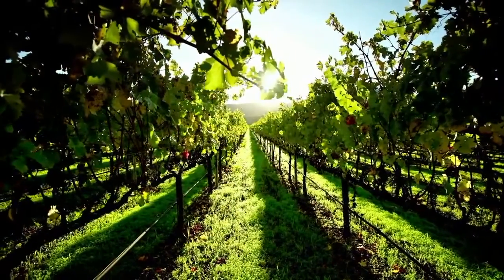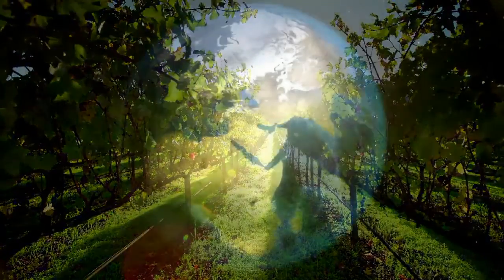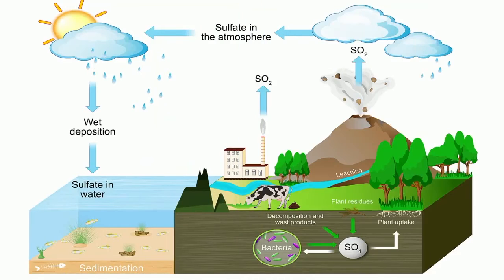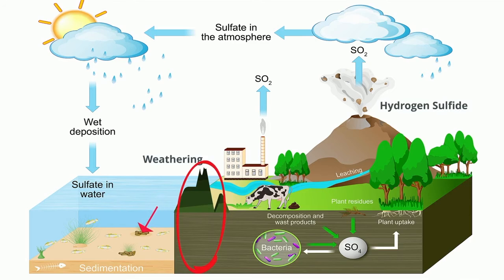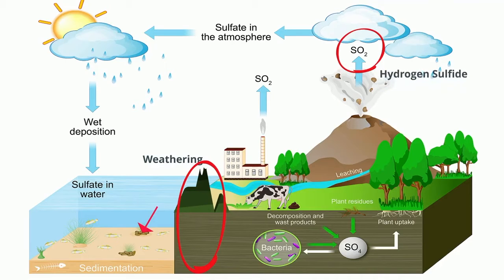All living things require sulfur in order to make protein. Let's take a look at how sulfur cycles itself around the Earth. Sulfur reserves are found in the lithosphere and are released by weathering. In addition, hydrogen sulfide and sulfur dioxide gas are released into the atmosphere by volcanic eruptions, hot springs, and the decay of biological material in swamps and bogs.